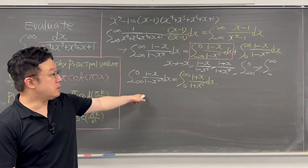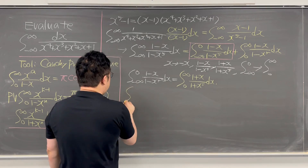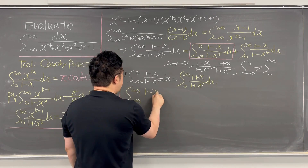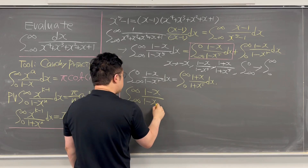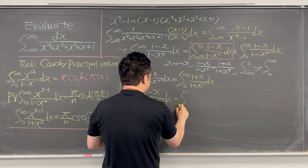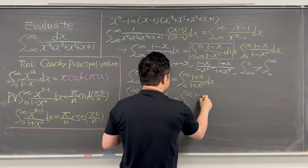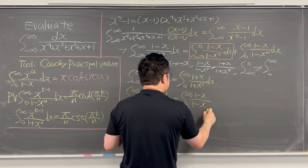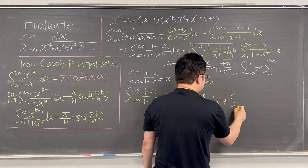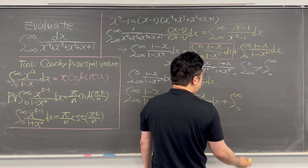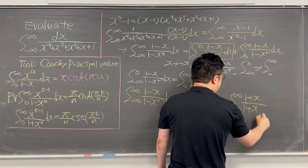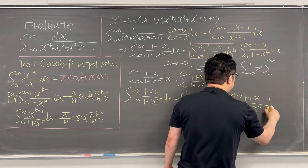So the full integral from negative infinity to infinity of 1 minus x over 1 minus x to the power of 5 dx equals the integral from 0 to infinity of 1 minus x over 1 minus x to the power of 5 dx, plus the integral from 0 to infinity of 1 plus x over 1 plus x to the power of 5 dx.